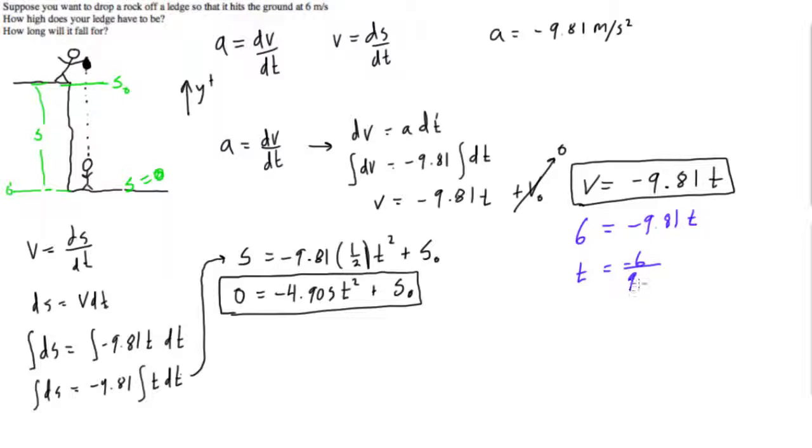So the time it takes is going to be equal to negative six over nine point eight one. Now I just did this on my calculator and I got this is zero point six one two seconds. Cool.